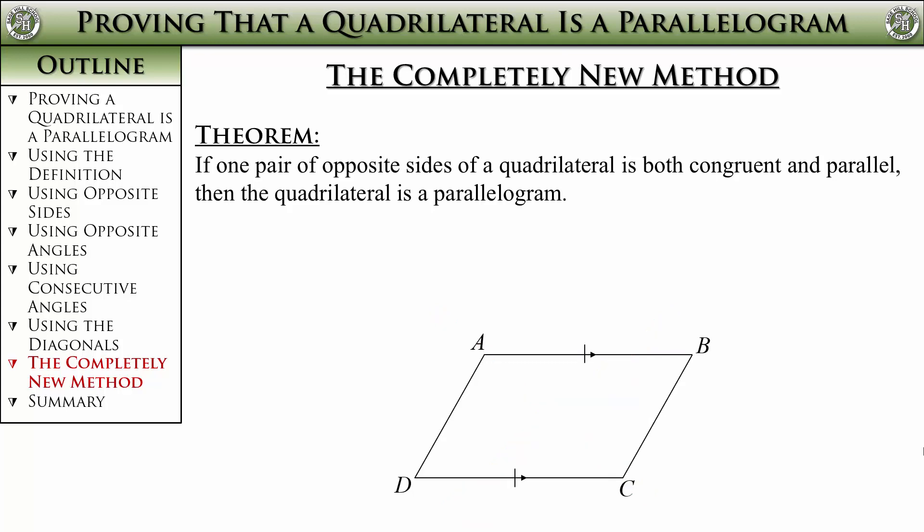Like the rest, this theorem doesn't have an official name, so it's time to abbreviate. I suggest something like this. One of the common mistakes students make with this abbreviation, or even if they write it out fully, is they forget the part about only one pair. That's important.